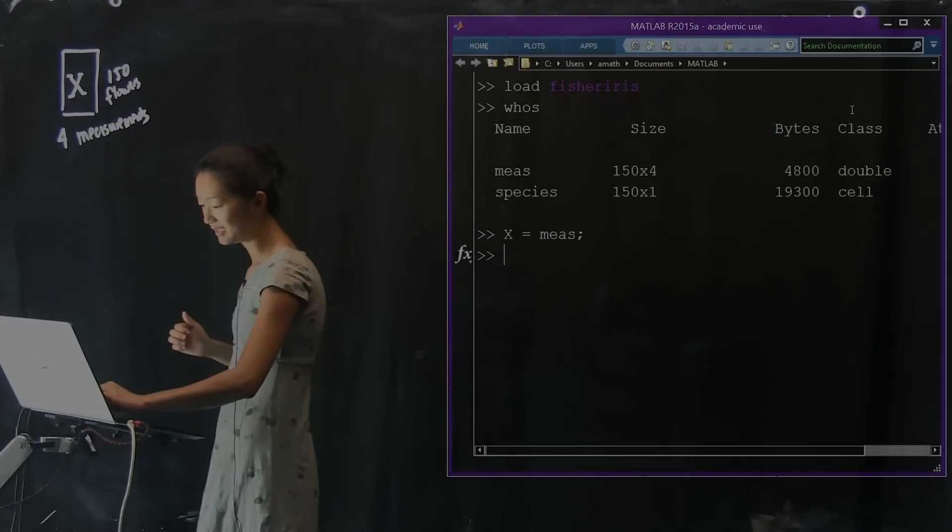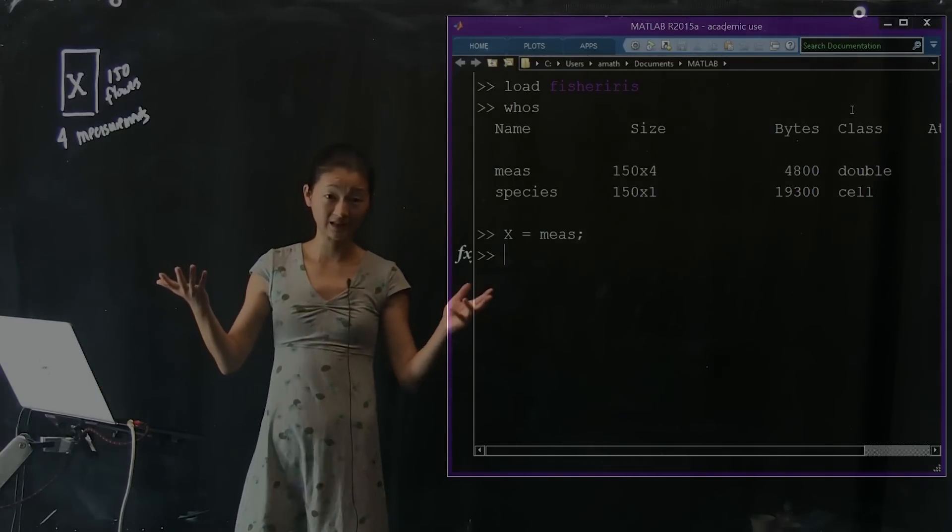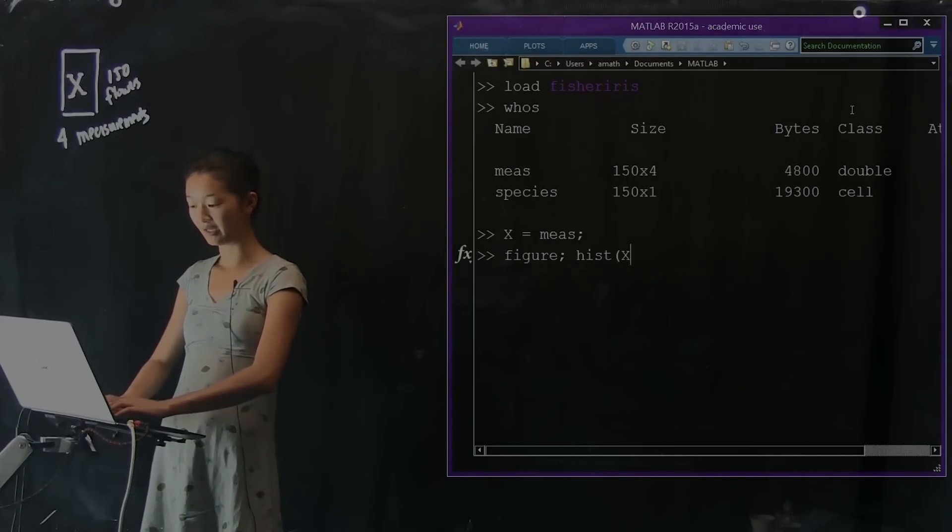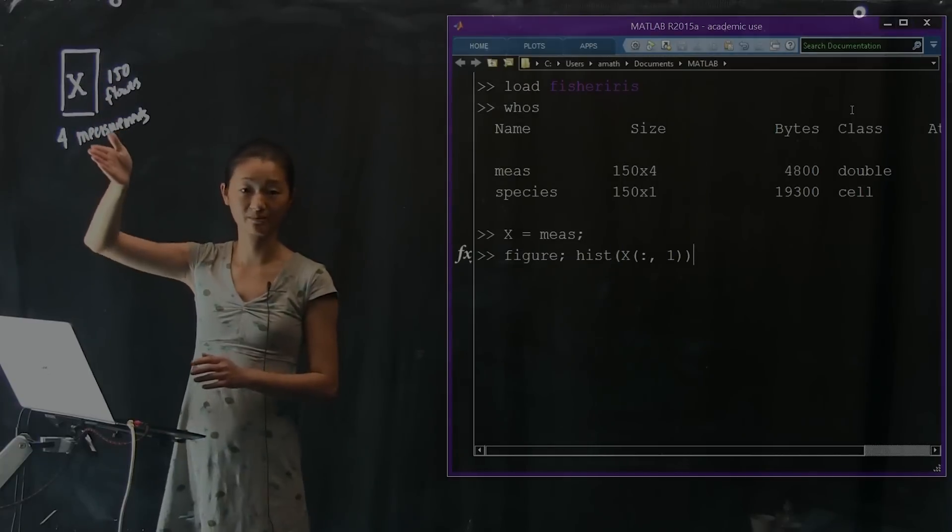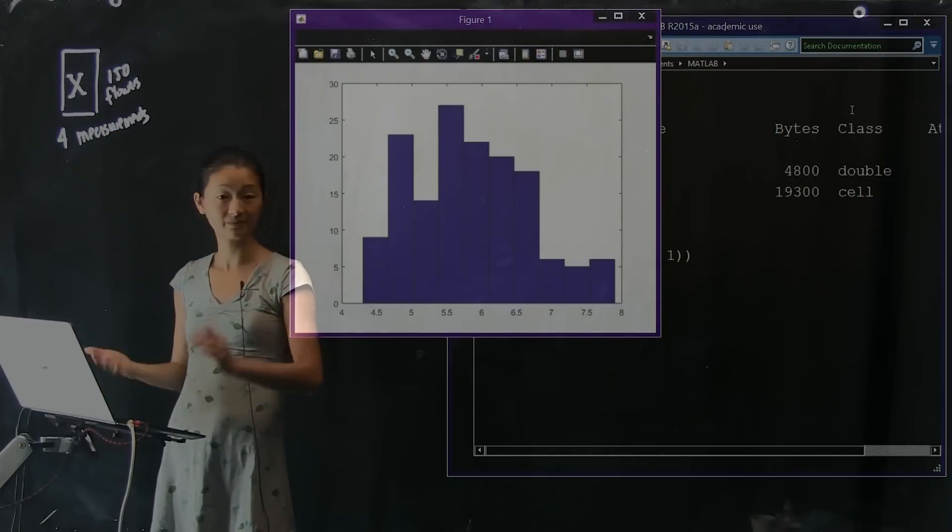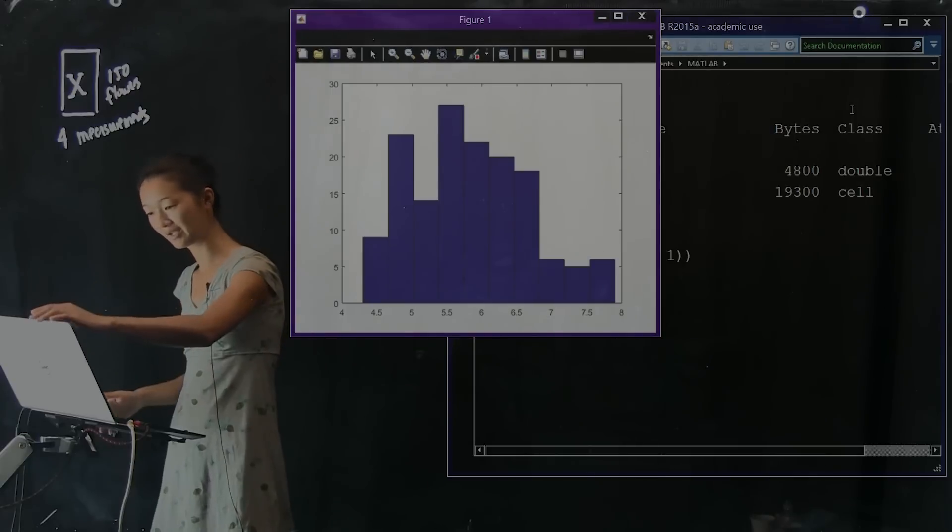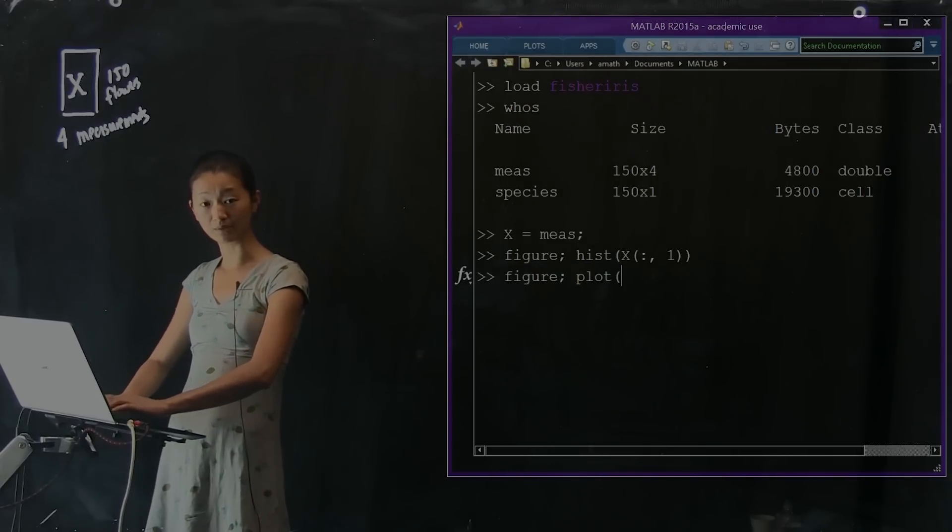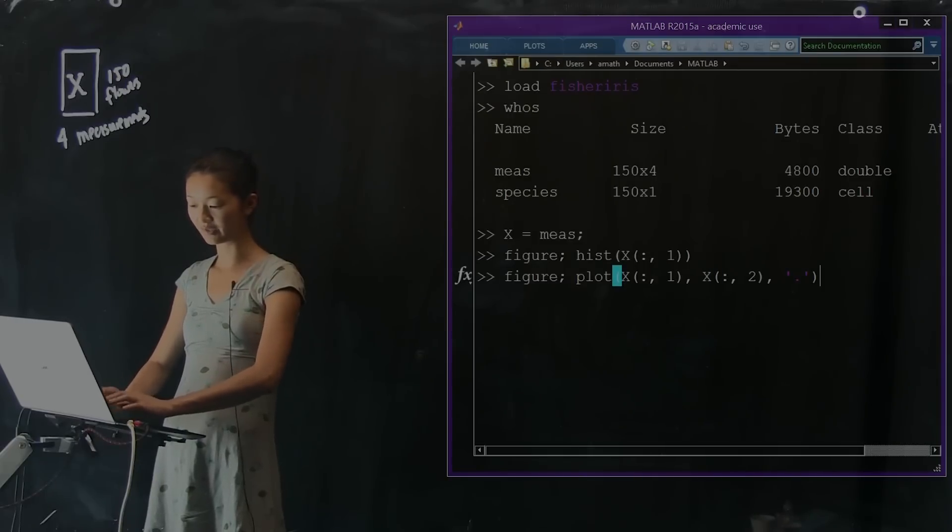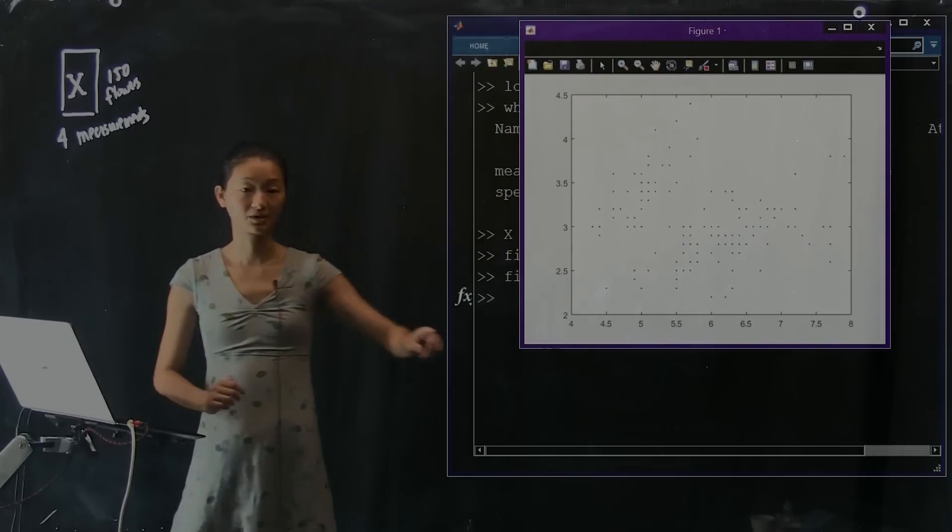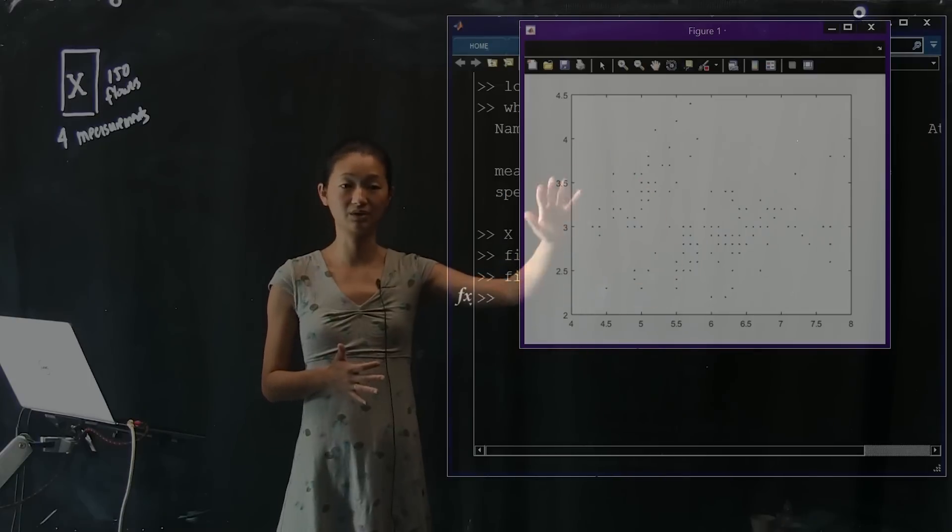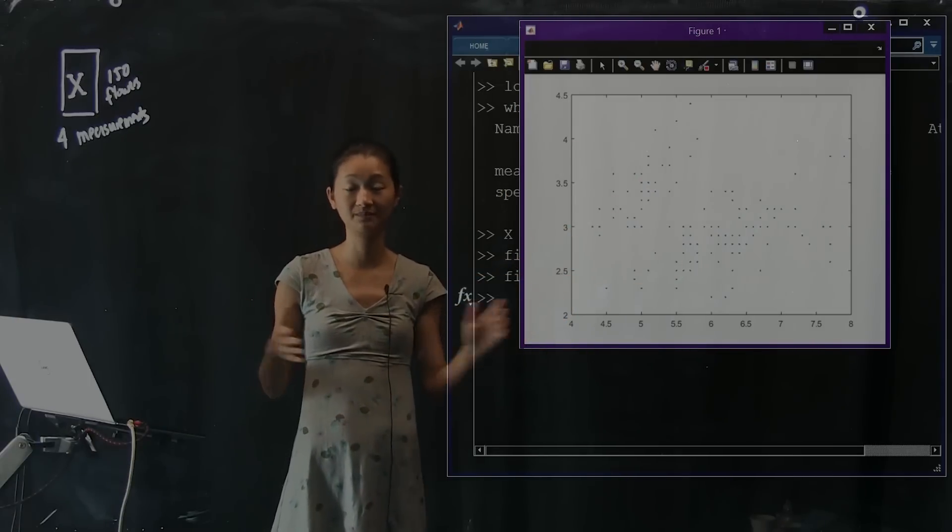So the first thing we can do is we can just look at some of these measurements in X. For example, we can plot a histogram of the first column of X. So whatever the first measurement is. And we can see that here's its distribution. If we wanted to look at more than one measurement at the same time, we can make a scatter plot. So we can plot, for example, whatever the first measurement is by the second measurement. So this is the first measurement of the horizontal axis, second measurement on the vertical axis, and here's all 150 flowers that I have to measure.